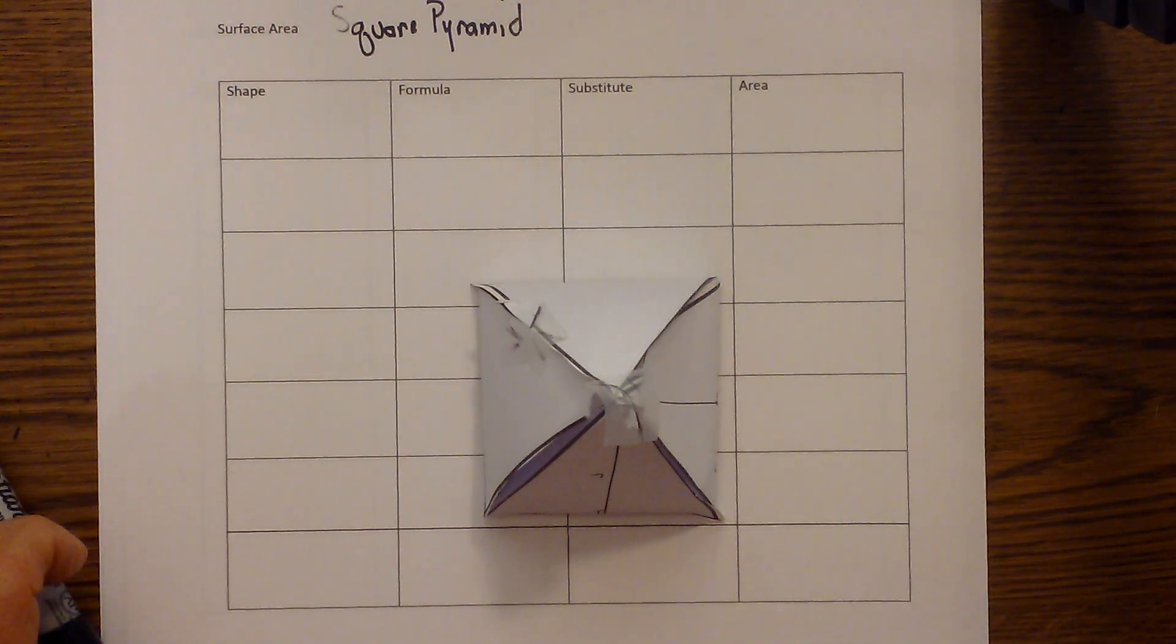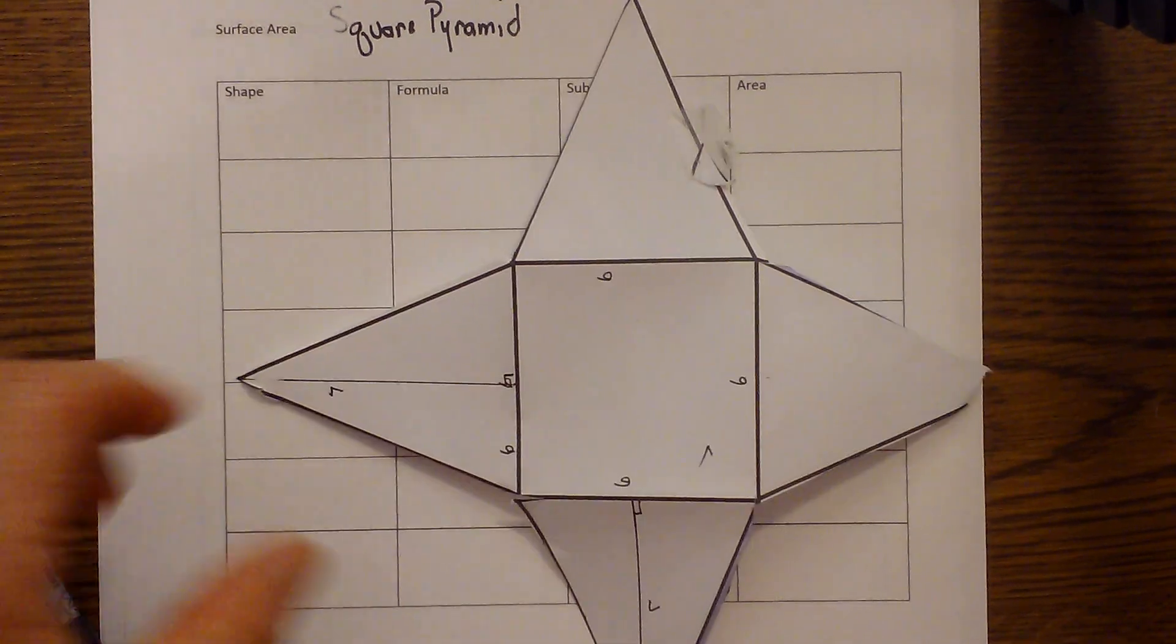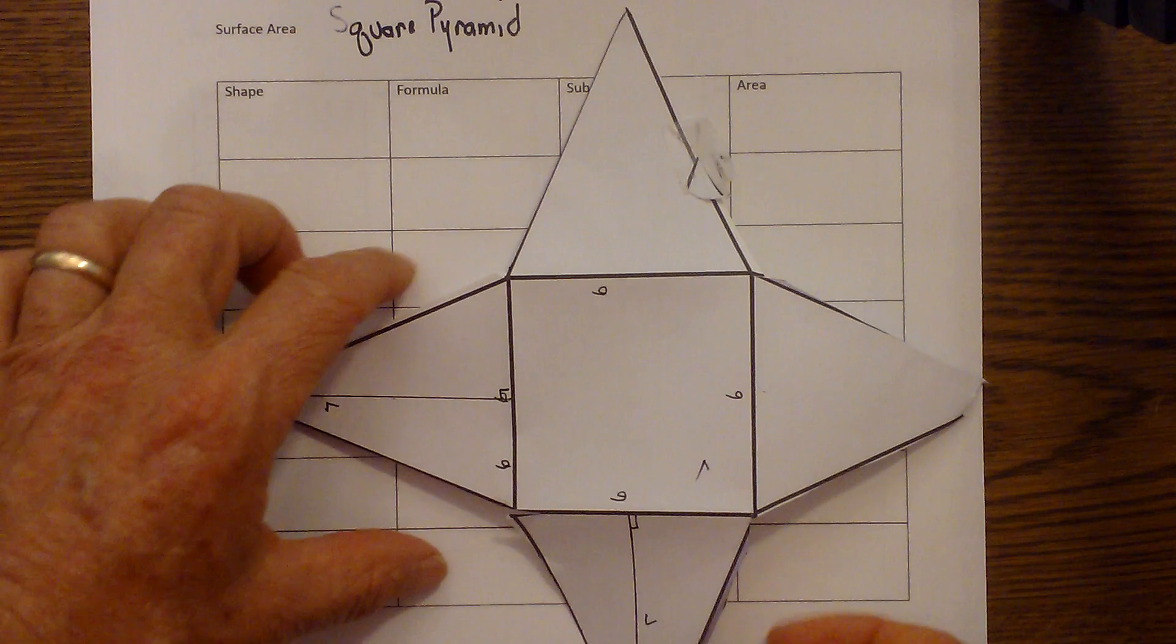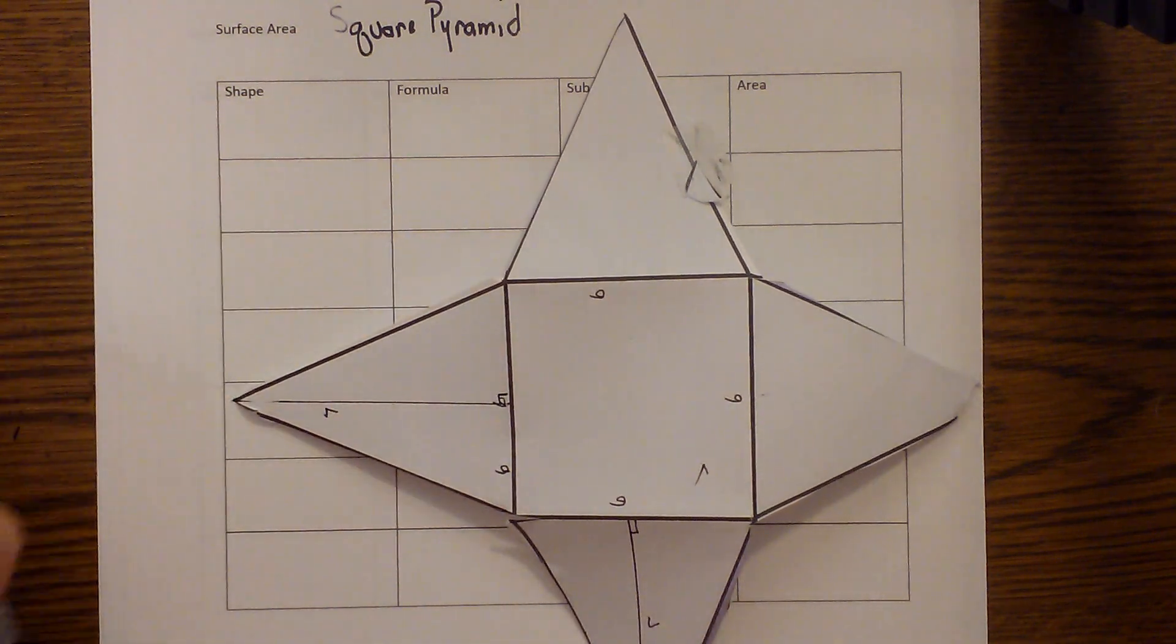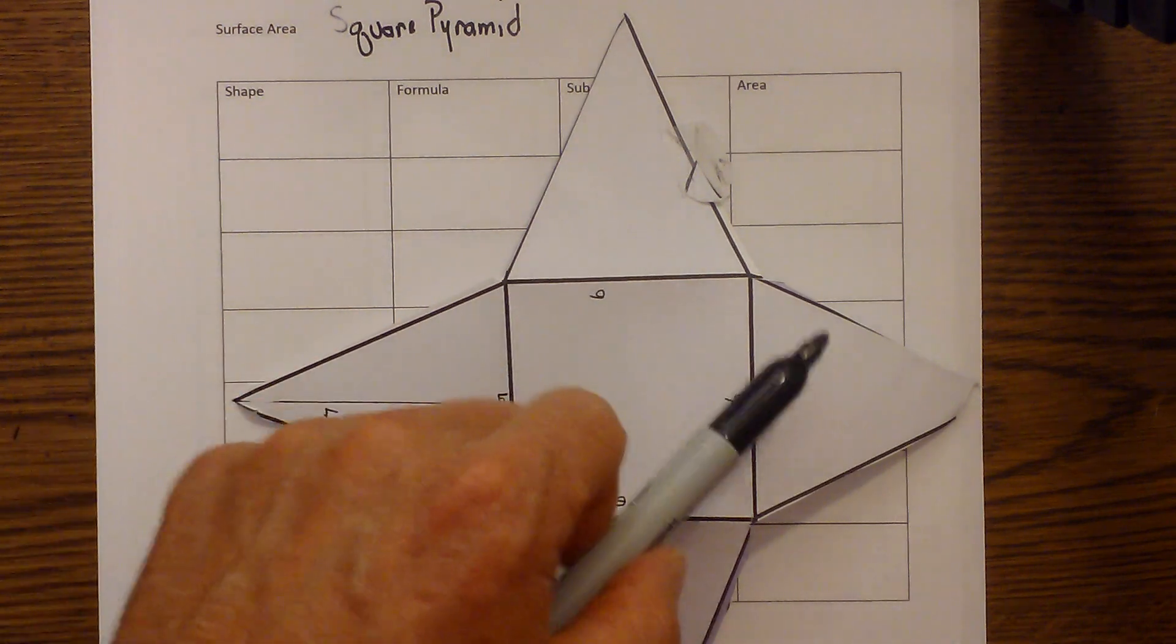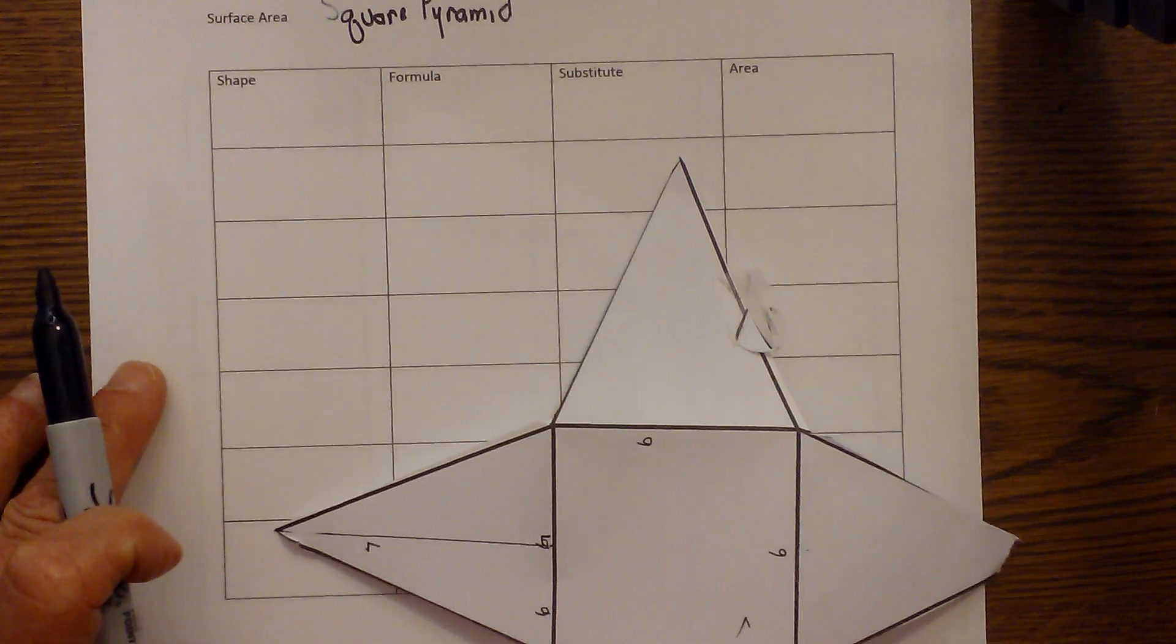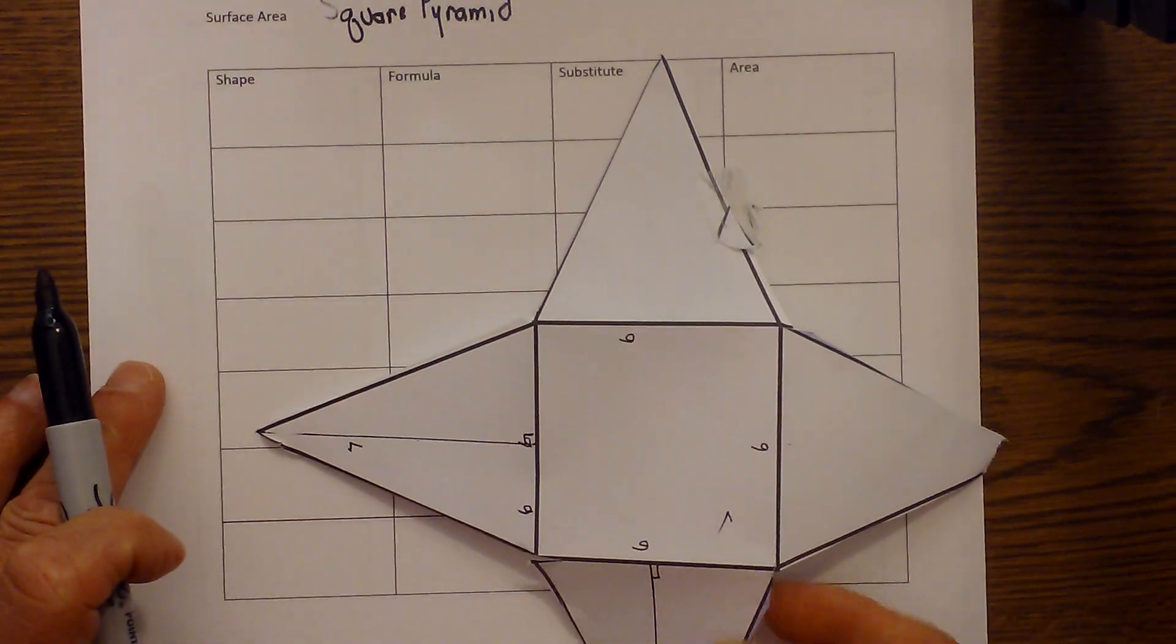Let me go ahead and unfold this so we can see what a square pyramid looks like. Now you can see that a square pyramid has a square base and then four triangles that go around. So I'm just going to use my grid, plug in some numbers, total it up, and I'll have total surface area.